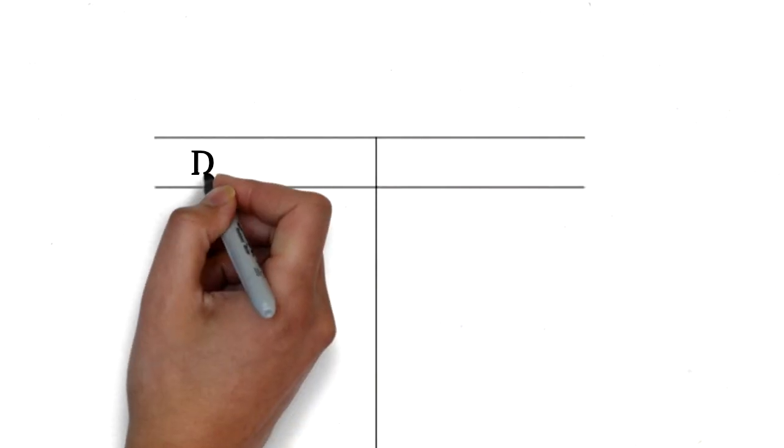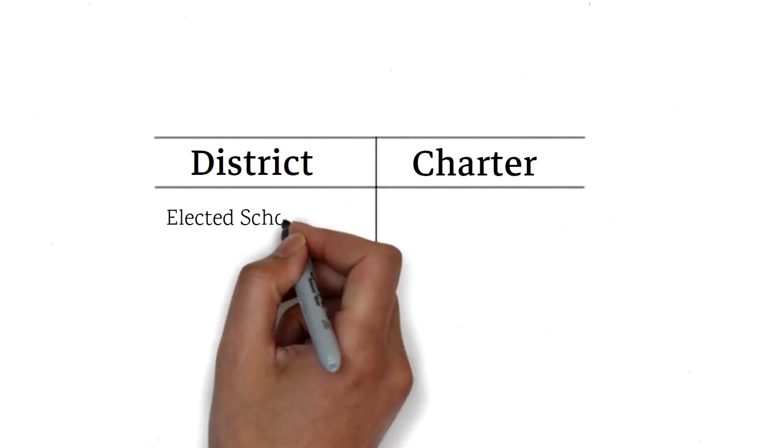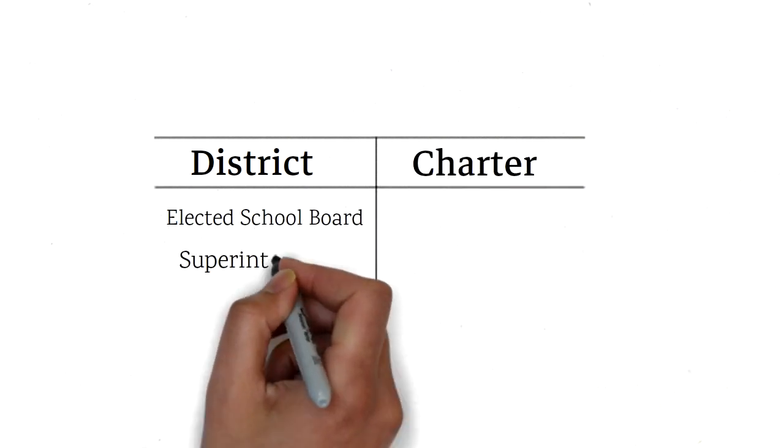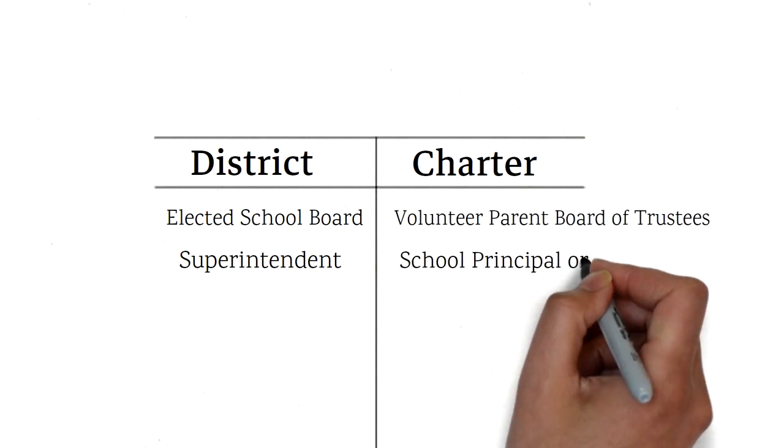A typical school district is run by a superintendent and an elected board. A charter school operates as its own district. The board of trustees functions as the school board while the principal or director of a school functions as the superintendent.